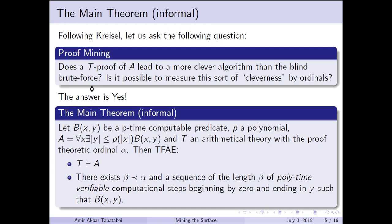Is it possible to measure this sort of cleverness by ordinals, like what we had for growth rate? The answer is yes, and this is the informal version of the main theorem that I want to explain. It says that if you have something like this and a theory with proof-theoretic ordinal alpha — and from now on assume alpha is epsilon-type, closed under beta maps to omega to the beta — then these two are equivalent: your NP-search problem is provable if and only if there exists beta less than alpha and a sequence of length beta of poly-time verifiable computational steps, beginning with zero and ending with the answer that you want. So this is an algorithm extracted from the proof.